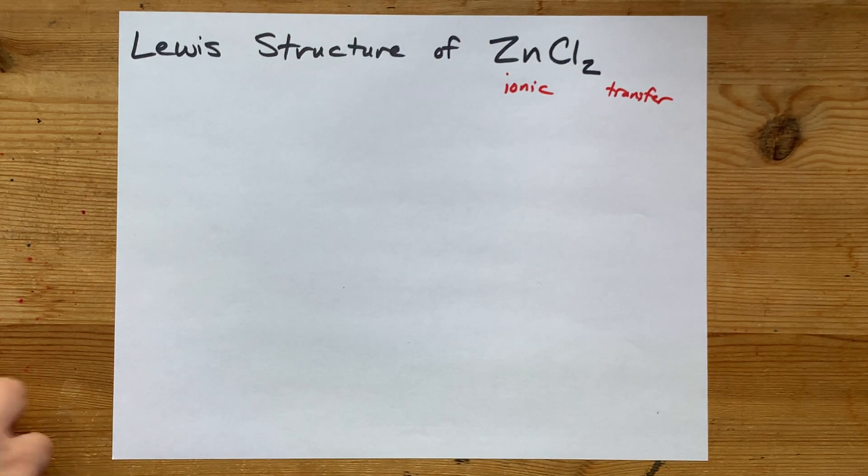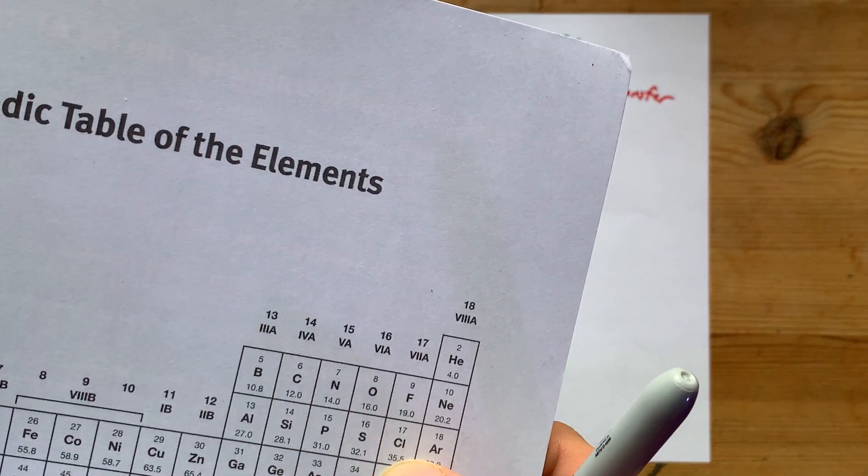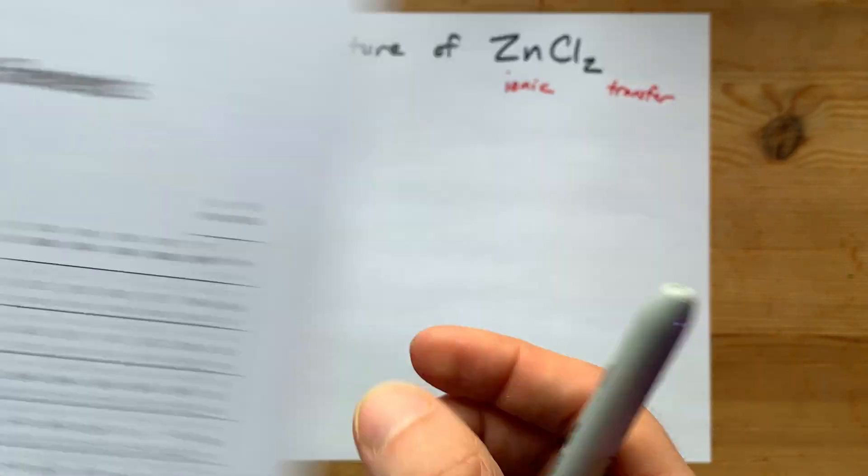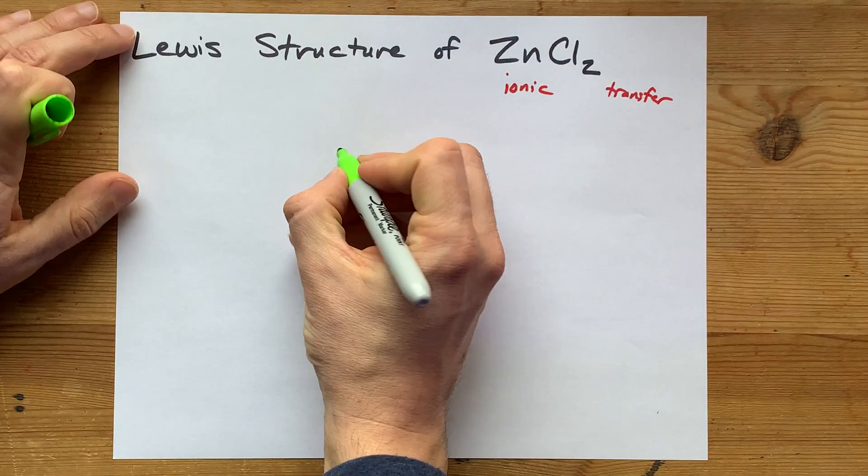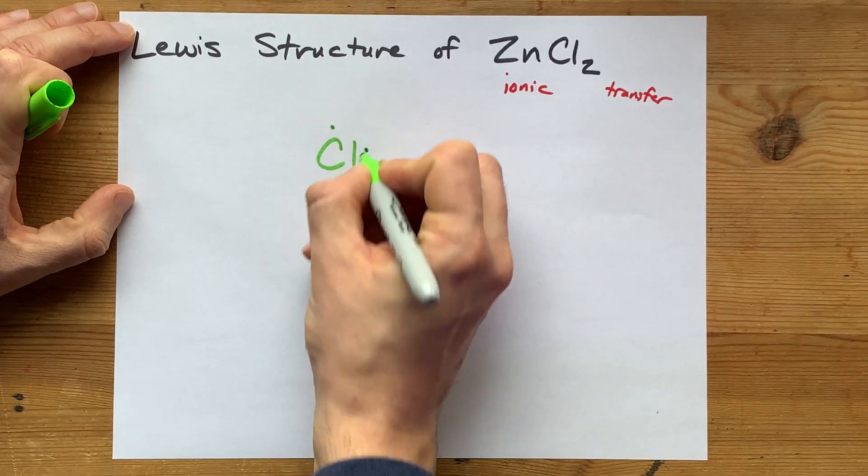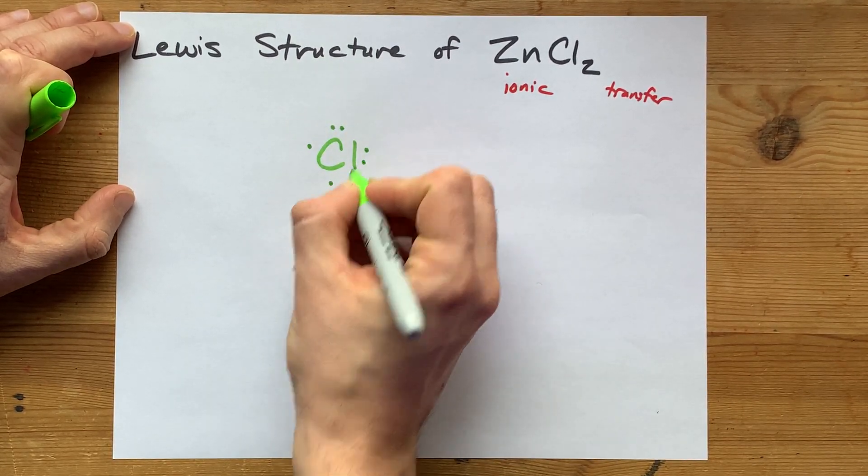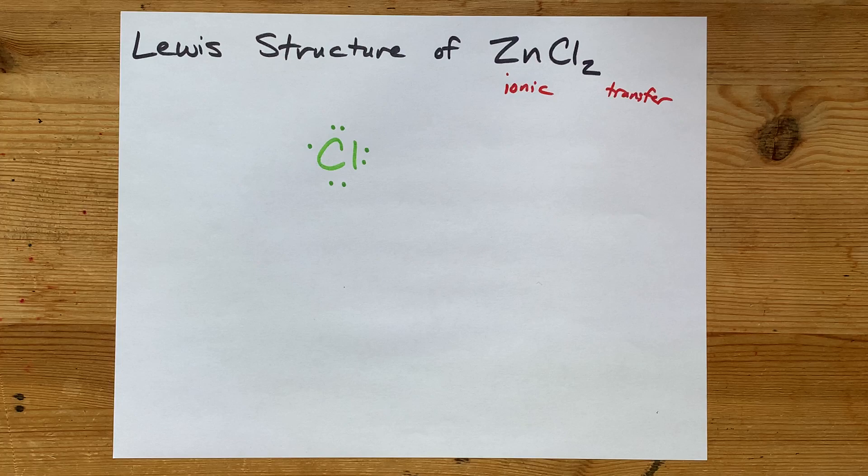Now, chlorine brings seven valence electrons with it. So I'm going to draw chlorine here with one, two, three, four, five, six, seven valence electrons.